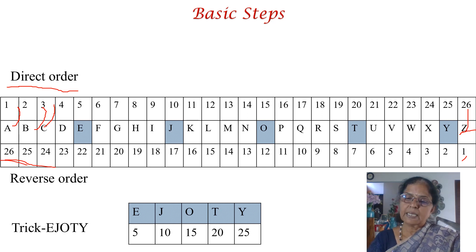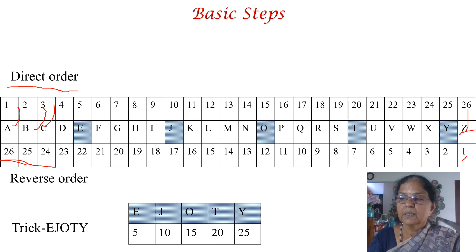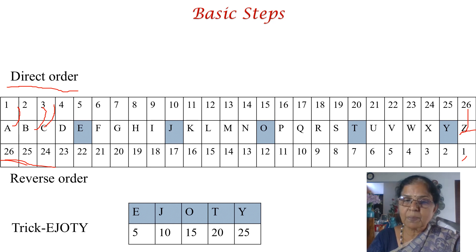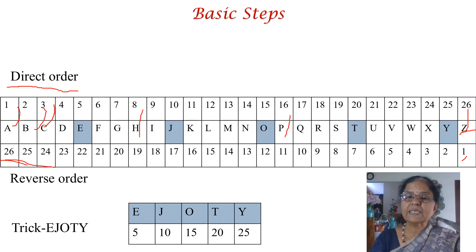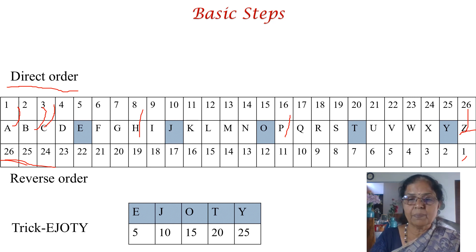Draw this table immediately as soon as you see any question on coding and decoding. This is easy. I don't think anybody can remember the corresponding numbers by heart — for example, H is 8 and P is 16. It is humanly impossible and a waste of time to memorize all of these, so draw this table immediately, even if it takes 2 or 3 seconds.